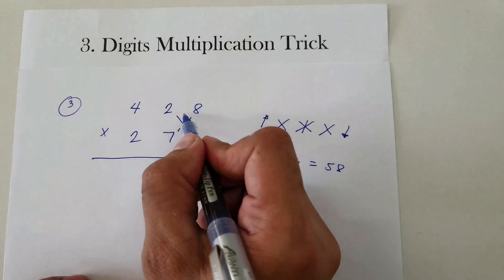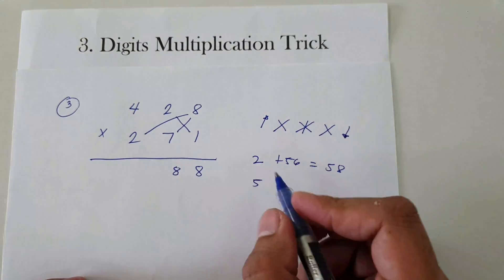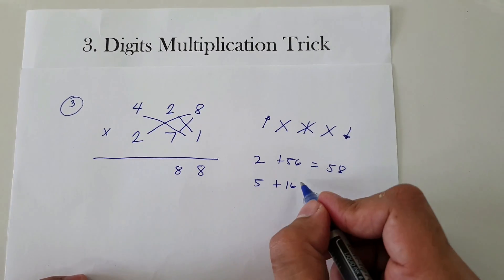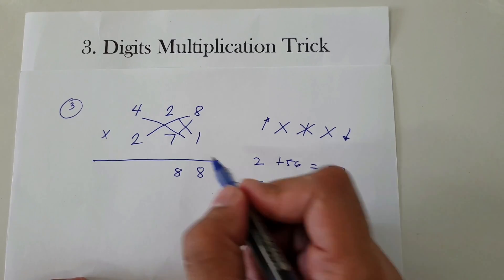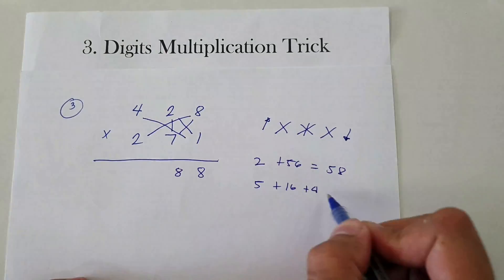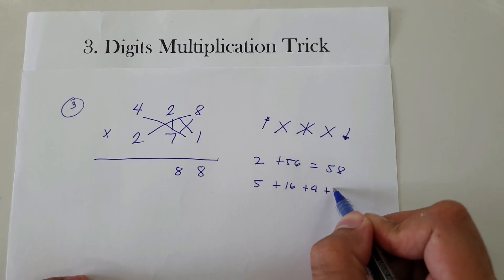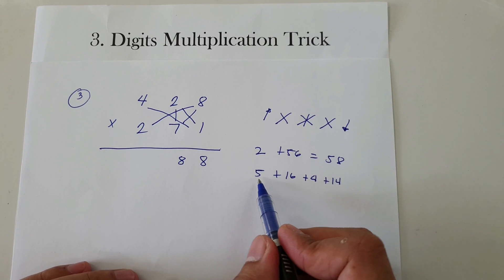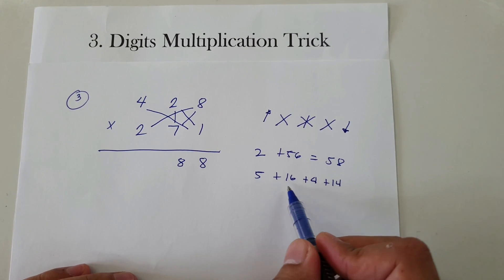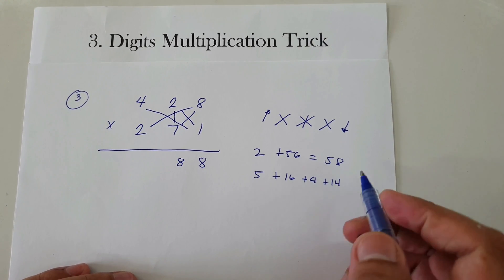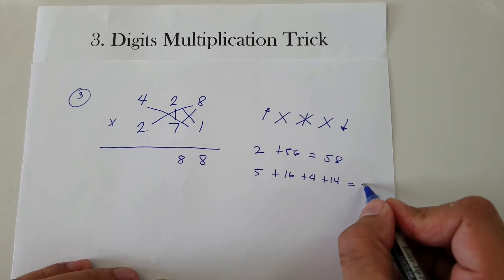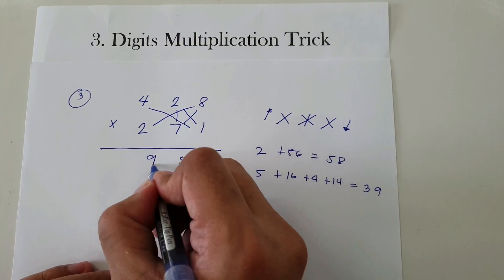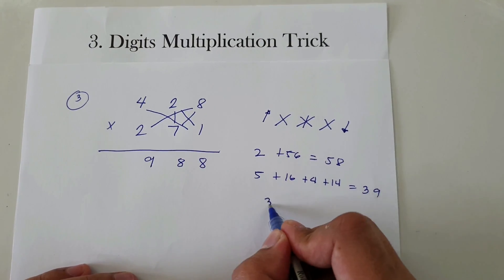Crossbar: 8 times 2 is 16, 4 times 1 is 4, and 2 times 7 is 14. Adding 8 plus 16 plus 4 plus 14, that's 42. Wait — if you add 5 plus 16 plus 4 plus 14, that's 39. So we're going to have 9 and carry 3.